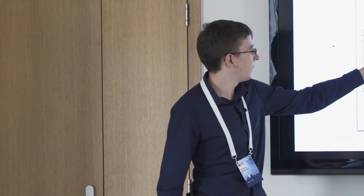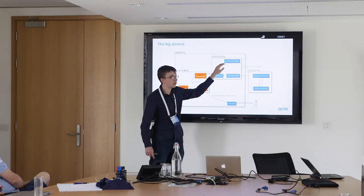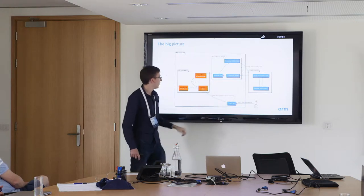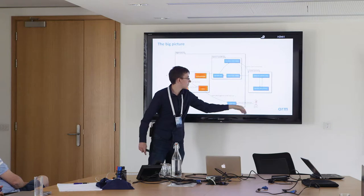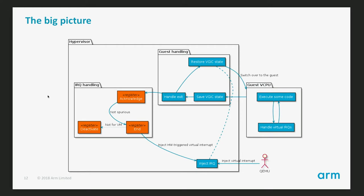When exiting for a physical interrupt, we start by acknowledging the interrupt and doing the priority drop. If it's an interrupt we want to forward to the guest, we leave it just priority dropped — still active but with lowered running priority — and then inject it into the guest. Injecting means modifying state in the hypervisor so that next time we run the guest we ensure information about those interrupts is in the list registers. The same applies for manual QEMU interactions.